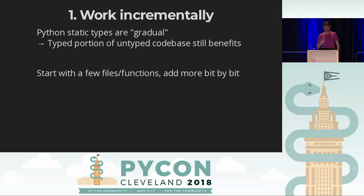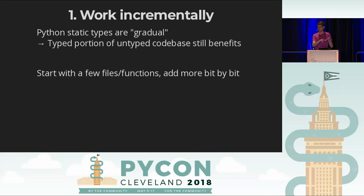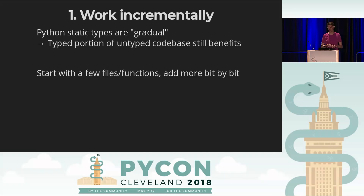The static type system for Python is gradual — 'gradual typing' is the academic term. When you have a code base that's partly typed and partly not, the typed part still benefits. You still get the benefit of knowing what's going on there. This wasn't easy to accomplish — 10 or 15 years ago nobody knew how to do this. But we have it now, so you should start with a few files, even just a few functions, and add more bit by bit.